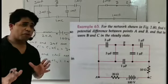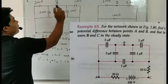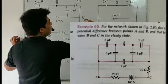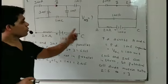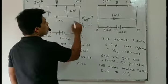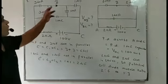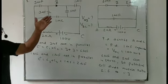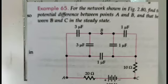He is asking us to find the potential difference across A and B — that is VAB — and we will also find the potential difference across B and C — that is VBC. You can see this question on the screen; you can take a screenshot or write this question.